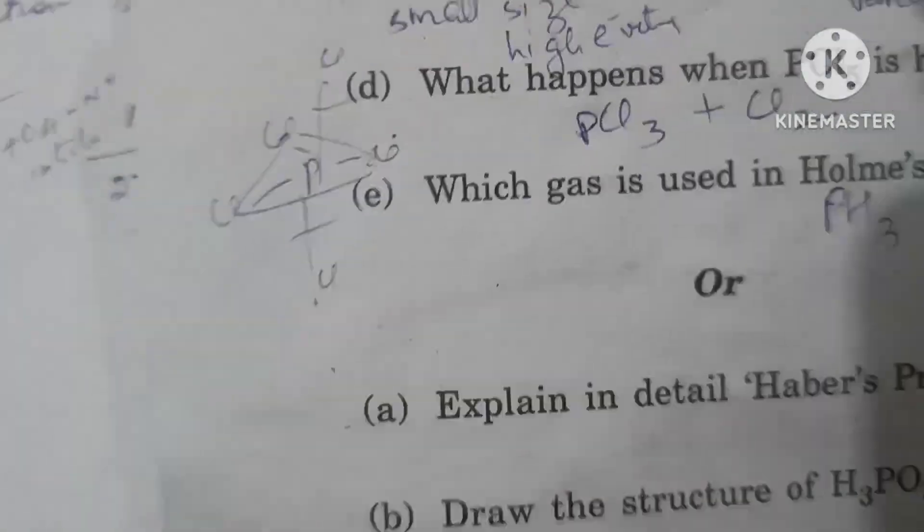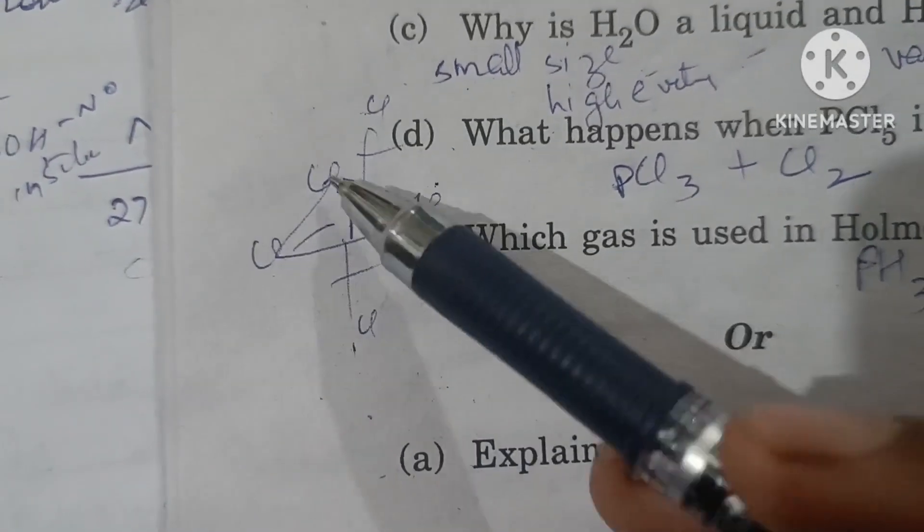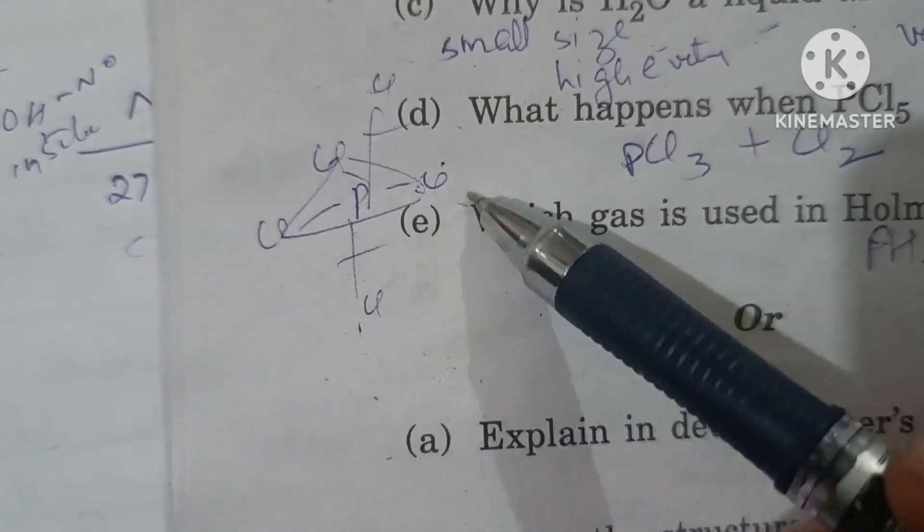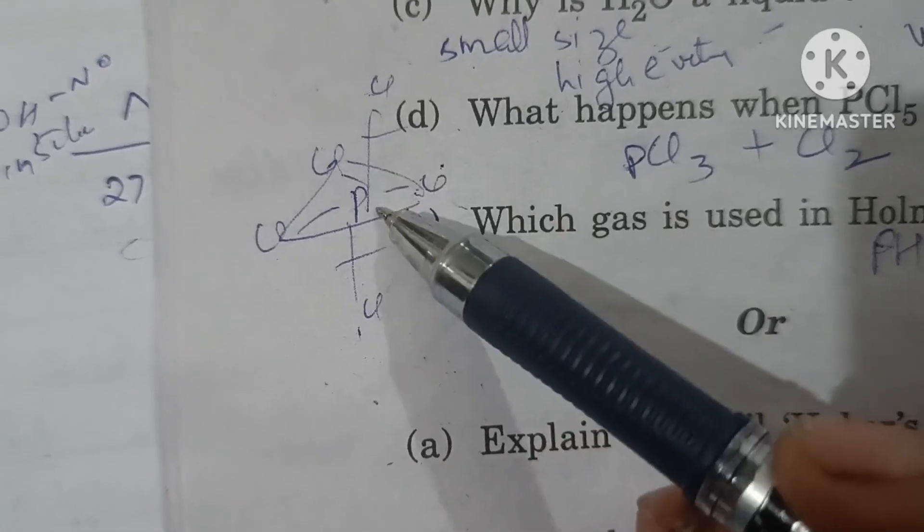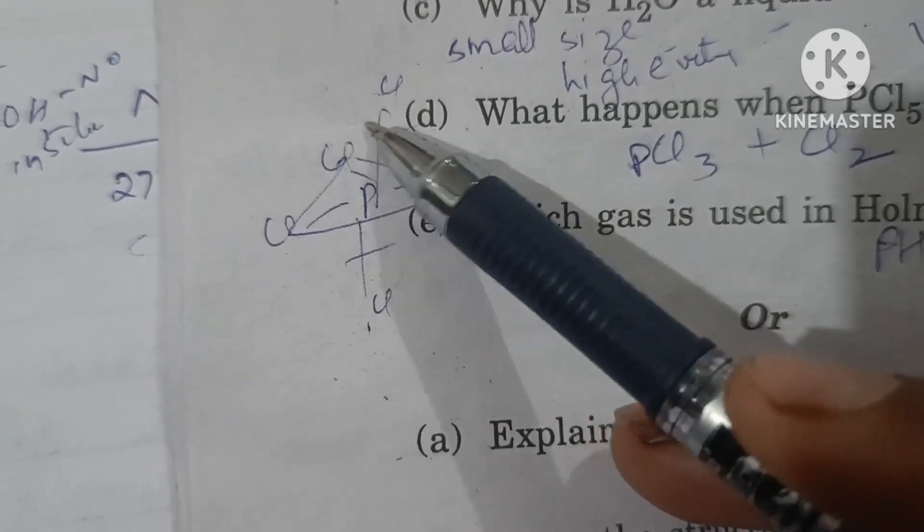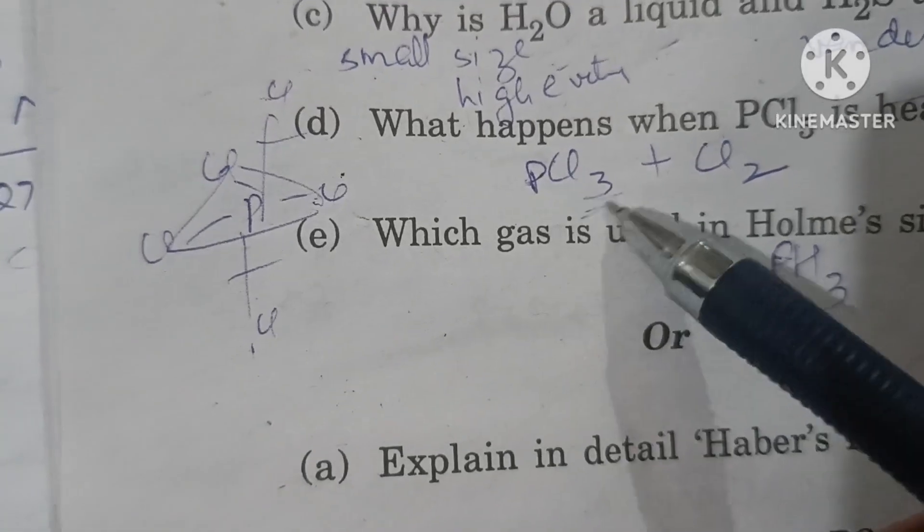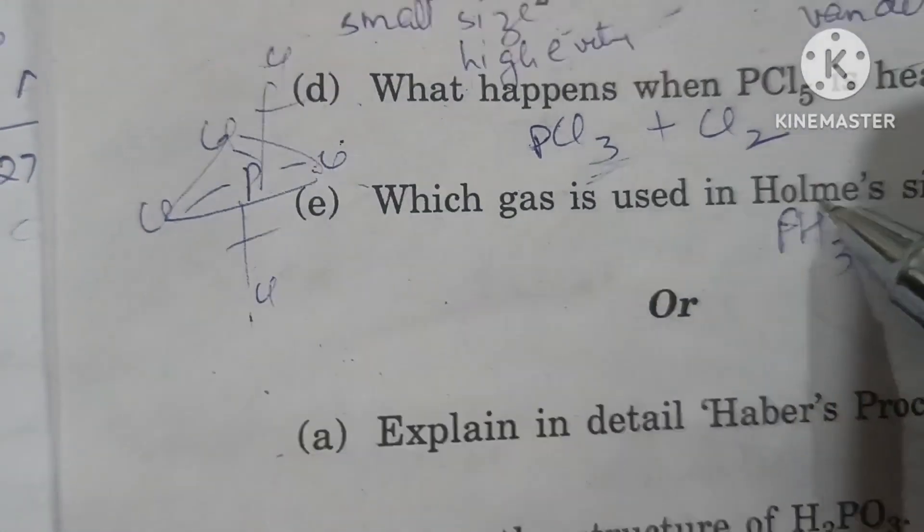What happens when PCl5 is heated? In PCl5, three chlorines are attached to phosphorus in equatorial bonds and two in axial bonds. These axial bonds are longer and break easily. So PCl5 breaks to form PCl3 and Cl2.